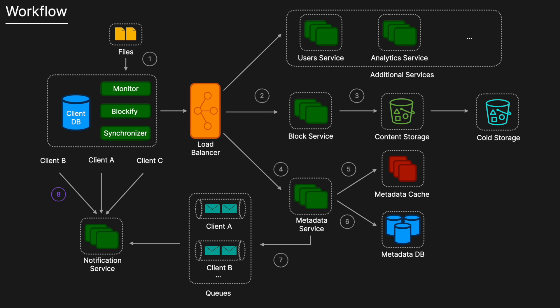On the download side: Client B establishes a long polling connection with the Notification Service and receives the queued message. The Synchronizer detects that it needs to retrieve data, so it reaches out to the Metadata Service to get information about the missing blocks. Finally, it reaches out to the Block Service, which retrieves the blocks from content storage and returns them to the client — completing the download of the blocks previously changed by Client A.